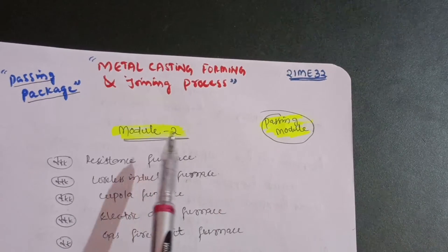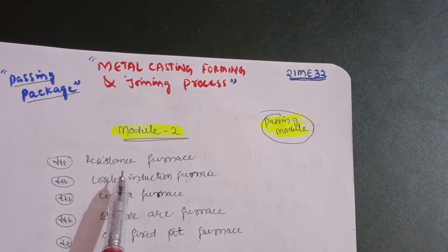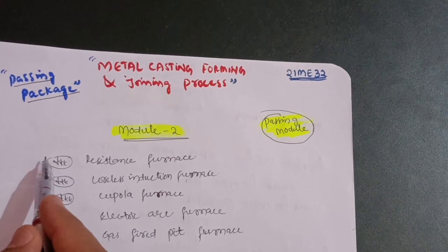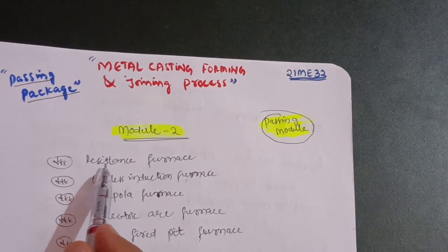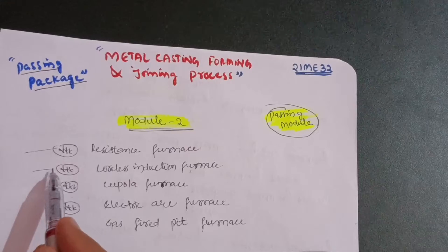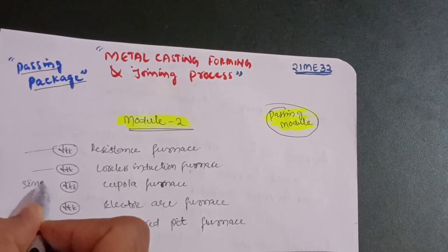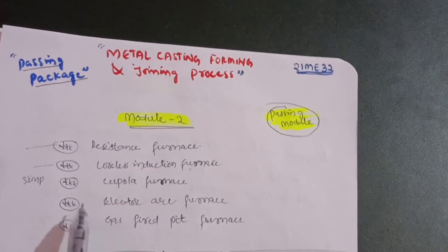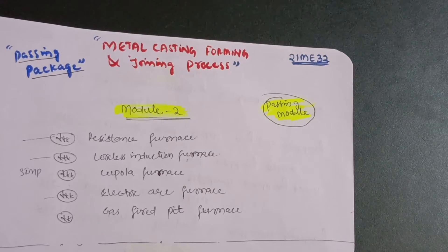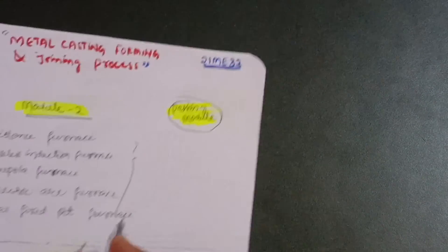The first passing module is Module 2, in which you only need to cover five questions to get 20 marks with ease. First: explain the resistance furnace with a neat sketch. Second: coreless induction furnace, which is the most important one. Third: cupola furnace, which I call the super important question. Fourth: electric arc furnace. Fifth: gas fired pit furnace. You should also remember their applications, advantages, and disadvantages.